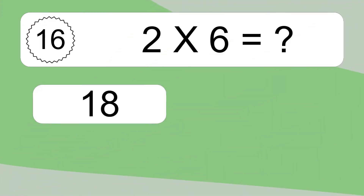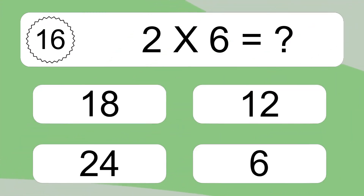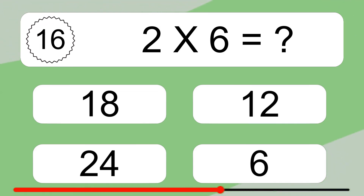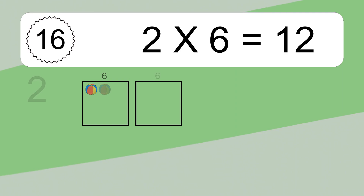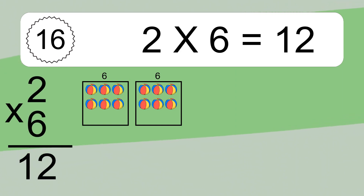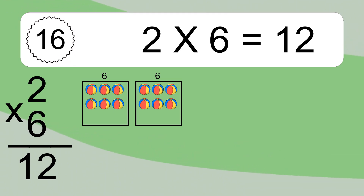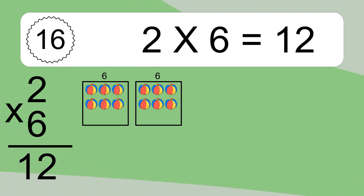2 times 6 equals what? 2 times 6 equals 12. We have 2 boxes and each box has 6 colorful balls inside. If you count all the balls in all the boxes together, you will have 2 times 6 balls. This equals 12 balls.